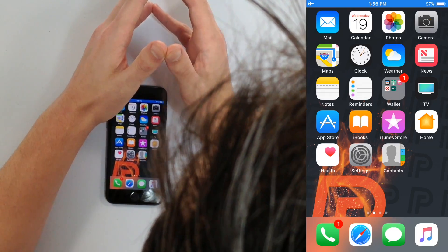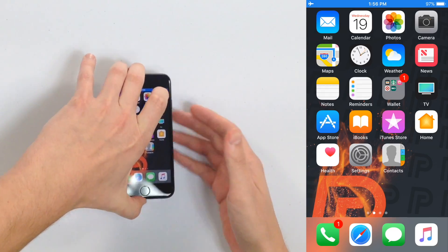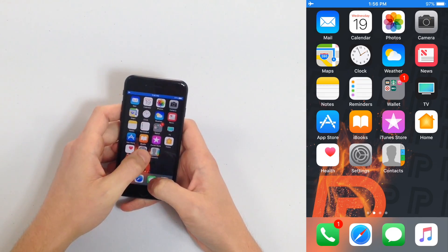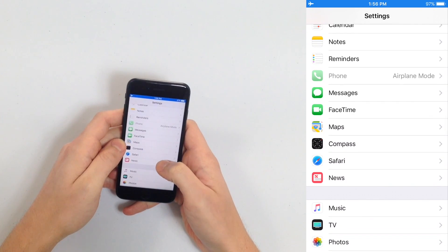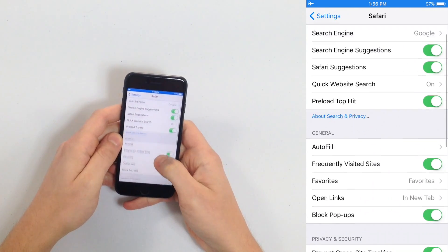So the first thing we're going to do is open up the Settings app, scroll down and tap Safari, and then scroll down again and tap Clear History and Website Data.